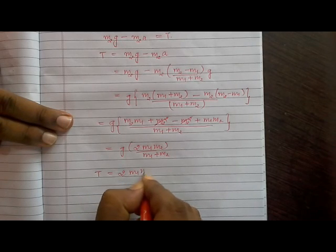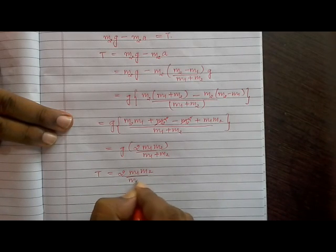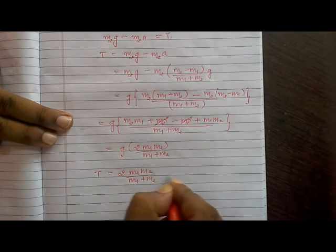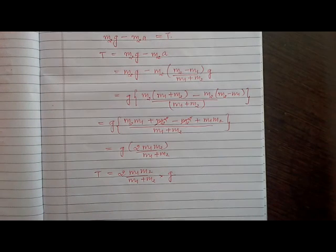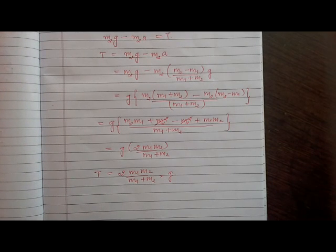So these are the expressions for the tension, which is 2m1m2g divided by m1 plus m2, and the acceleration, which is (m2 minus m1)g divided by m1 plus m2.